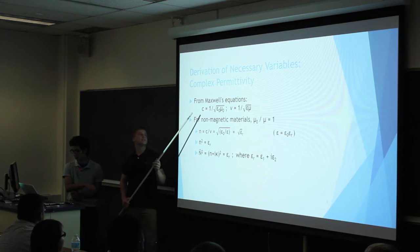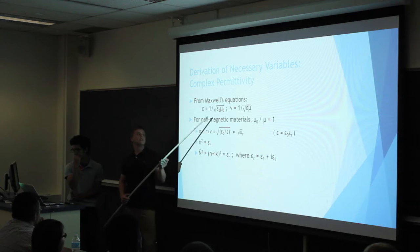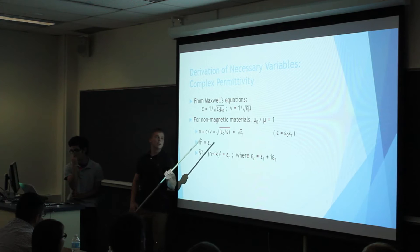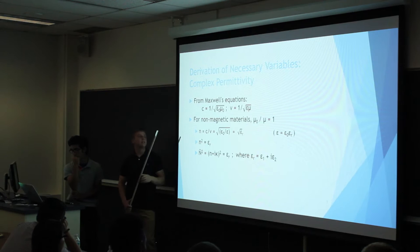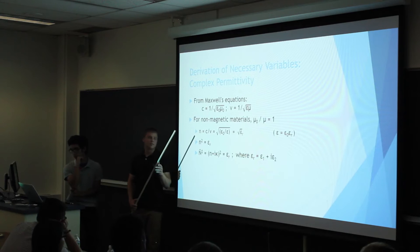For Maxwell's equations, we have these relationships which relate the speed of light to the permittivity and permeability — epsilon being permittivity and mu being permeability, whether of the vacuum or the material we're traveling through. For non-magnetic materials, the permeability mu naught over mu is actually equal to one. So all we have to worry about is the permittivity. Going back to the refractive index, which is equal to c over v again, we substitute in this ratio of the permittivity.